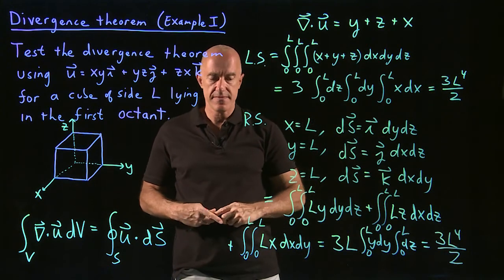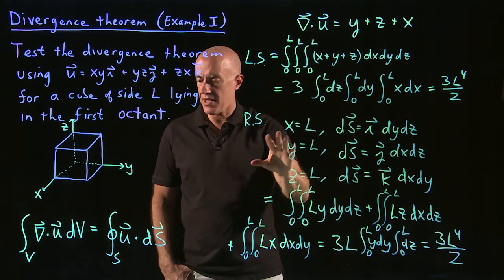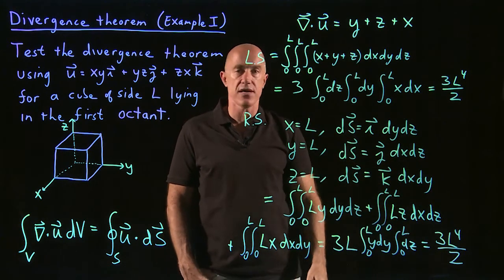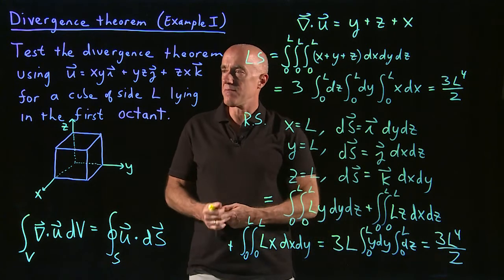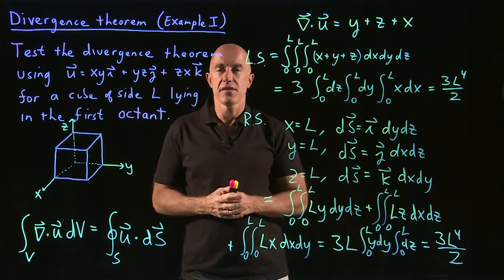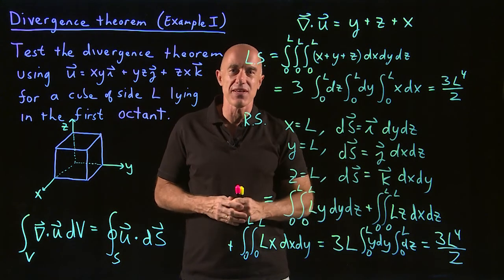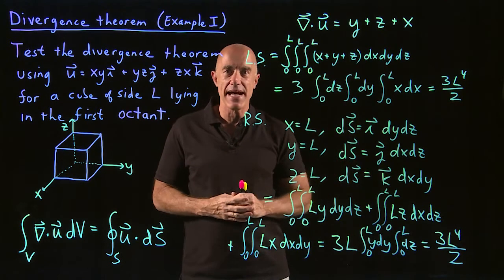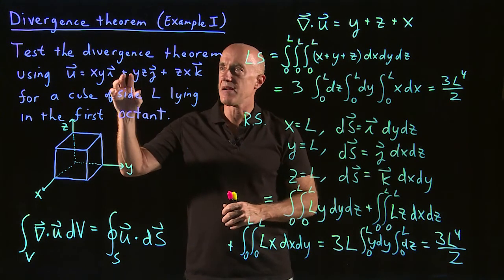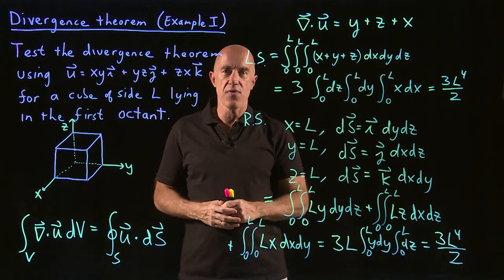We get the same result: 3l⁴/2. The left-hand side — integrating del dot u dV over the volume — and the right-hand side — integrating u dot dS over the surface — both give 3l⁴/2. This demonstrates the divergence theorem for this particular case. Next up will be an example of the divergence theorem in spherical coordinates. I'm Jeff Chasnoff — thanks for watching and I'll see you in the next video.